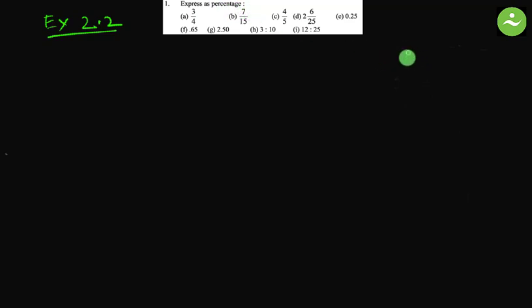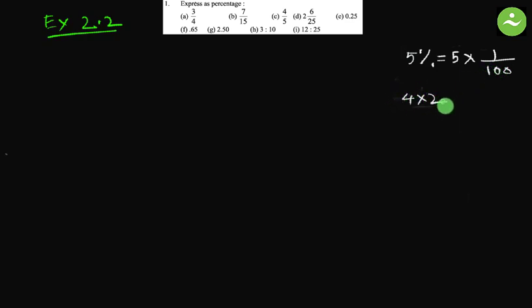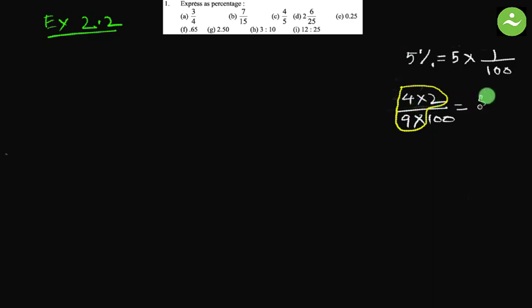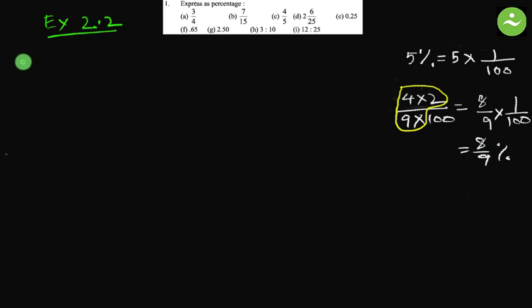Before we start, let us talk about percentage. 5 percent means 5 multiplied by 1 by 100, because percent means 1 by 100. If there is a fraction like 4 times 2 over 9 times 100, and we need to express it as a percentage, we separate 1 by 100 from it: 4 times 2 is 8, and here is 9 multiplied by 1 by 100.